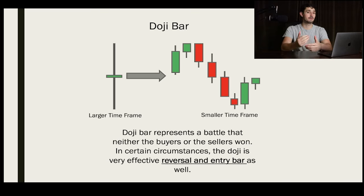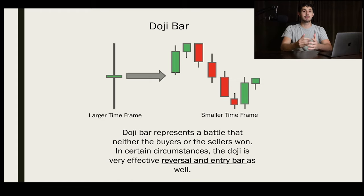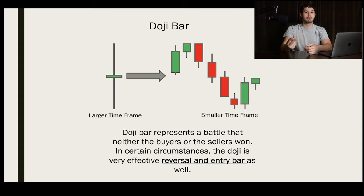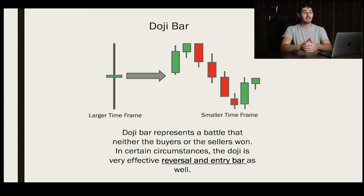Now that you have an idea of the different types of candlesticks, it's time to put those candlesticks in a sequence and try to read patterns. One candlestick doesn't really tell us the story — we need to look at several candlesticks to get an idea of what's happening with the stock or crypto. Depending on the sequence, they form different patterns: buy setups, breakouts, climactic plays. I'm going to make YouTube videos about all of them, so go ahead and subscribe if you want to see those.